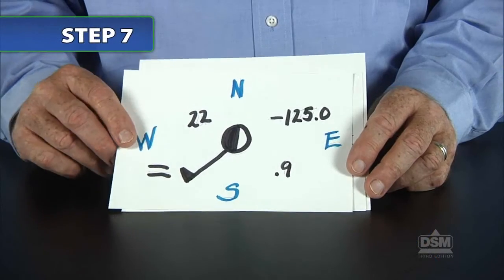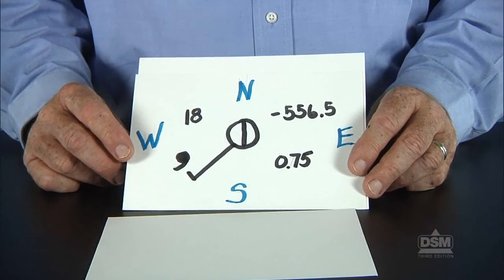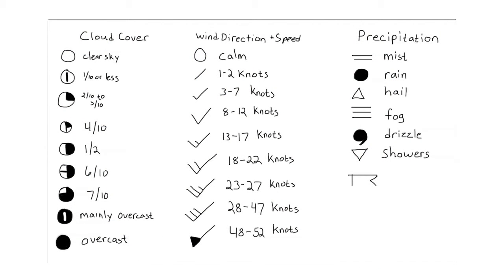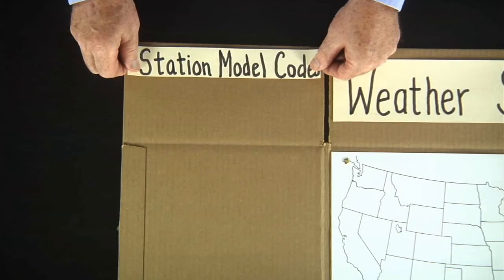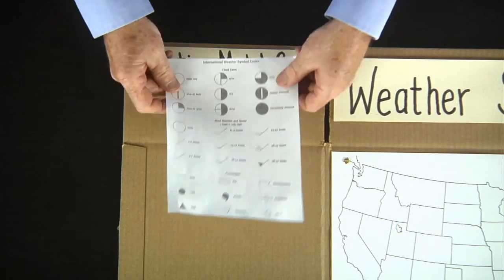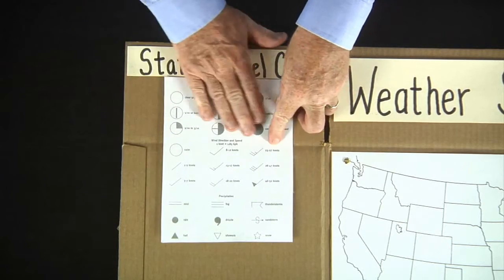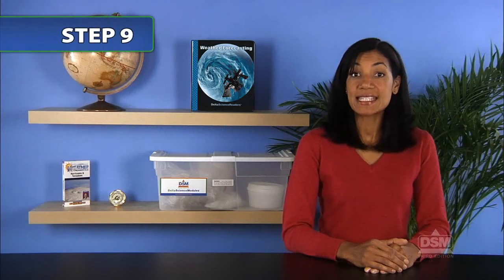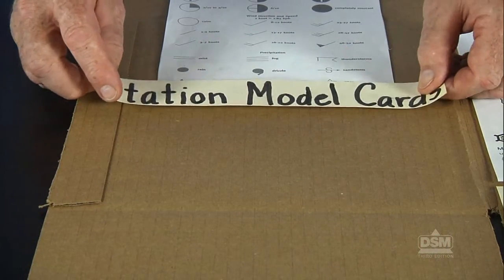Show the station model cards that you have made one at a time. Have students interpret the information contained in the symbols on the cards. Ask teams to draw the weather symbols from Activity Sheet 6 onto a horizontal piece of construction paper. Have the teams retrieve their weather stations and write the heading 'Station Model Codes' on the upper left part of their weather stations, then secure the code sheets to their stations below the new heading with two paper fasteners.